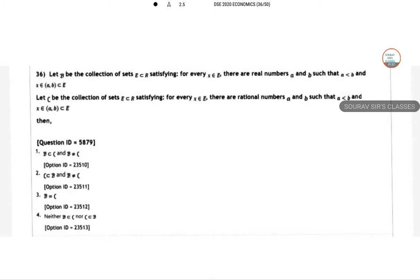So here we have a collection of sets. B be the collection of sets x belongs to E and there exists real number a, b for which this thing. And there is a rational number a and b such that a < b.